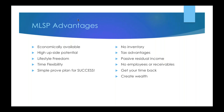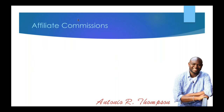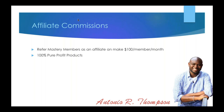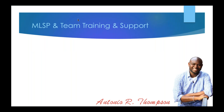MLSP allows you to earn affiliate commissions — earning from the 90-95% of people who say no to your business opportunity. Refer Mastery members at the affiliate level and you make 100% commission every month for each member. You get 100% pure profit products minus a small merchant fee, and 30-50% commissions on certain products. Support: you will be supported. We have a plethora of training and activity happening each week.